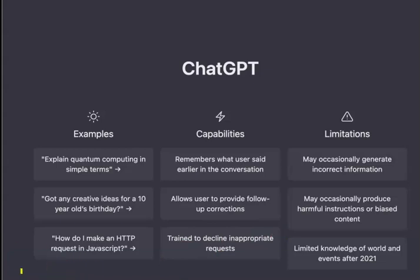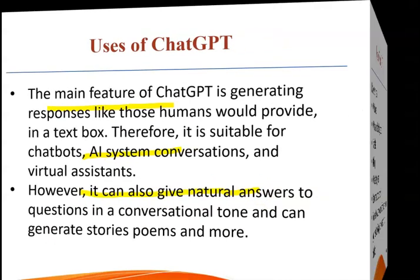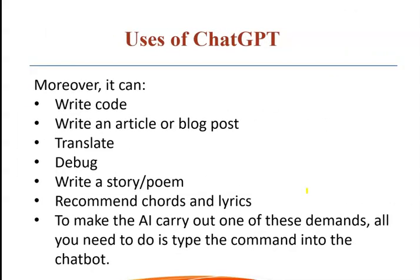ChatGPT shows us a user interface where you can see examples, capabilities, and limitations. The main feature of ChatGPT is generating responses like a human being. It is suitable for chatbots, AI system conversations, and virtual assistants. It gives you natural answers to your questions in a conversational tone, and you can generate poems or stories as well.